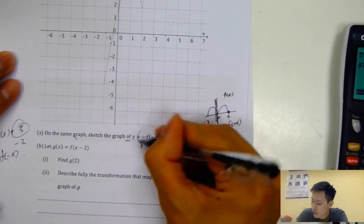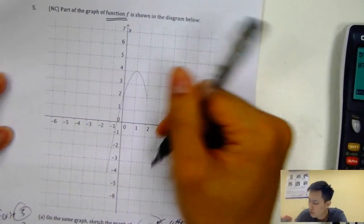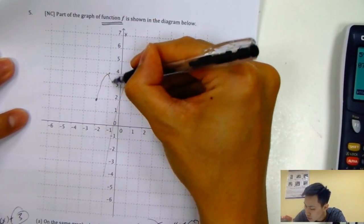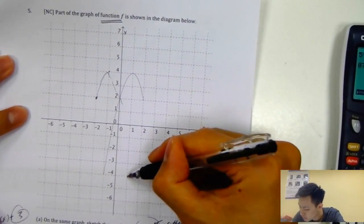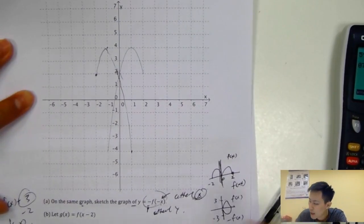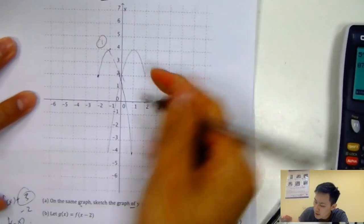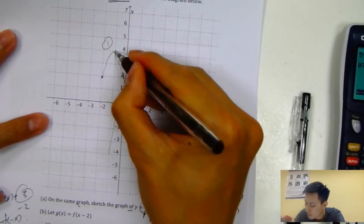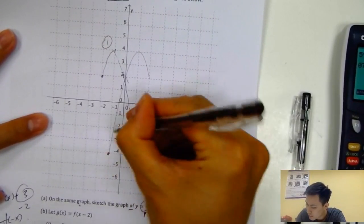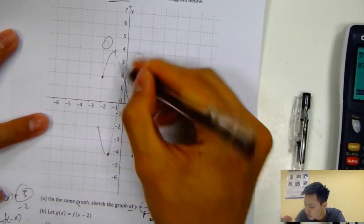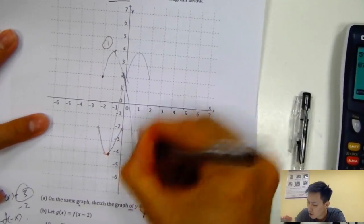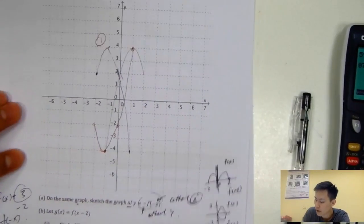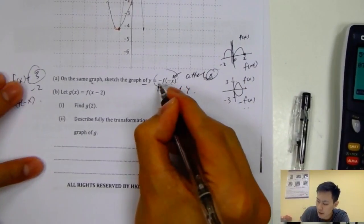So for minus f of minus x, it will flip to the left and flip down. Step one: flip to the left. Step two: flip down — so 4 becomes minus 4, and this point becomes minus 2. Connect all the dots: minus 4 becomes 4. Draw it out, and that is the final answer. Remember: inside the bracket affects x, outside the bracket affects y.